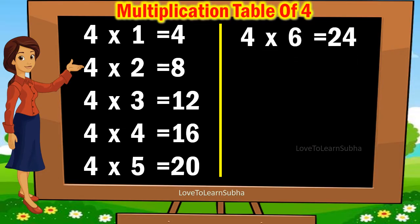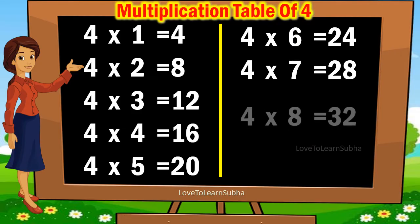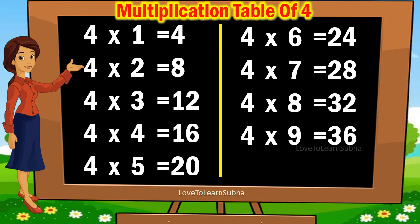4 sixes are 24, 4 sevens are 28, 4 eights are 32, 4 nines are 36, 4 tens are 40.